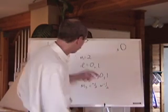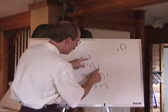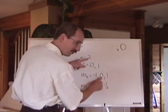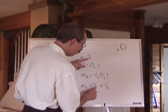Now the seventh electron, two, one, no, zero. That's right. Two, one, zero, plus a half.